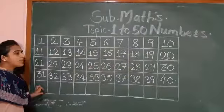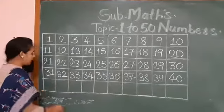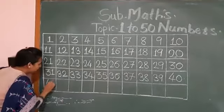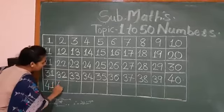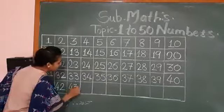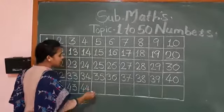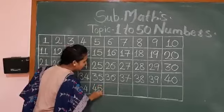Now see, only one line is going to come here. Which number will come here? Four tenth one, forty-one. Four tenth one, forty-one. After, four tenth two, forty-two. Four tenth three, forty-three. Four tenth four, forty-four. Four tenth five, forty-five.